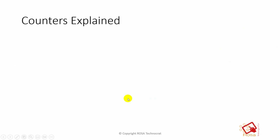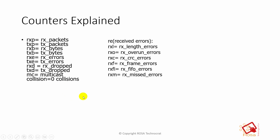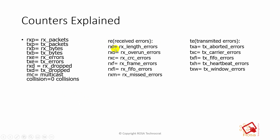The 're' line is for received errors, and 'te' is for transmit errors. If there are physical or layer one issues — SFP issues, fiber cable issues, or other physical problems — you will see CRC errors and frame errors increasing. If the issue is related to the interface queue, you'll see rx FIFO errors. If the firewall is busy or the CPU is highly utilized, you may see missed errors increasing.